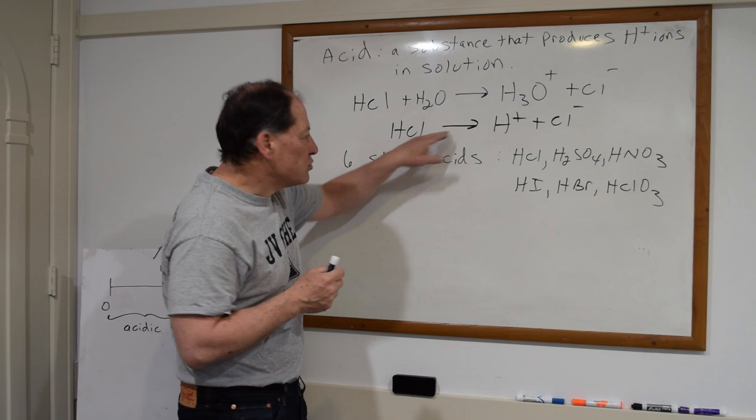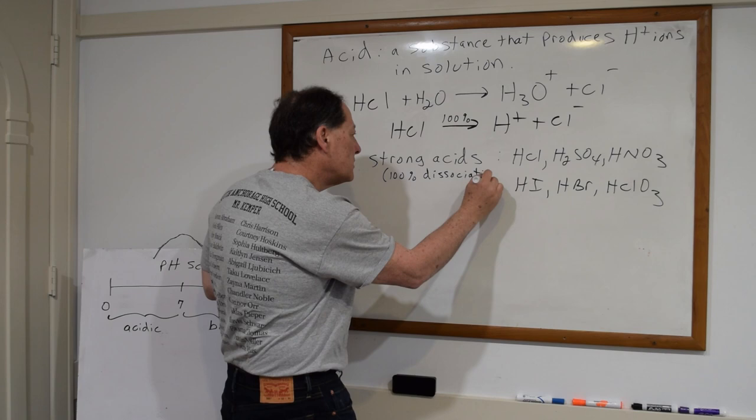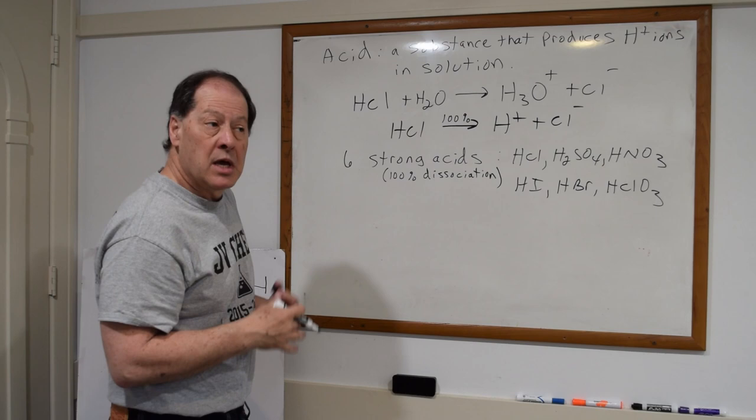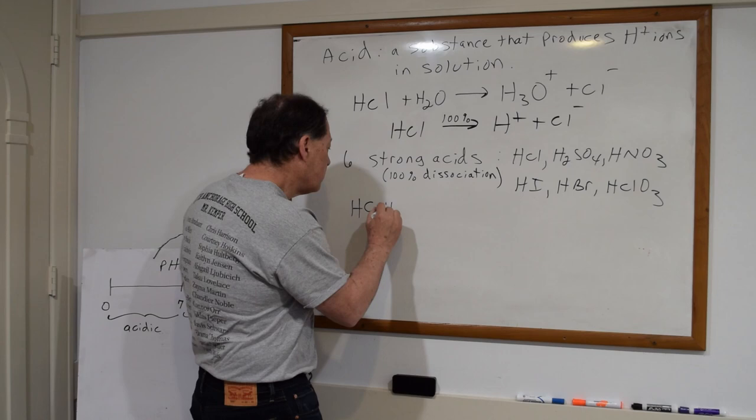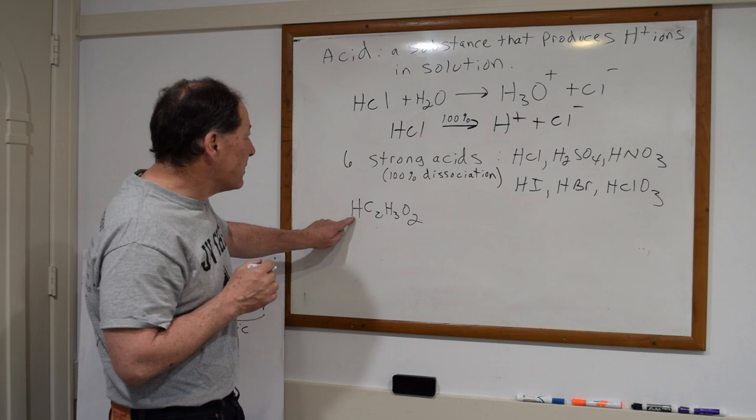Each of those are strong acids. What does that mean? It simply means that 100% of those molecules break apart — 100% dissociation. Any other acid you can think of is a weak acid. A very common weak acid that you're familiar with is vinegar. We can usually notice an acid in a formula because it's got an H right in the front — that's a good clue the substance is an acid.